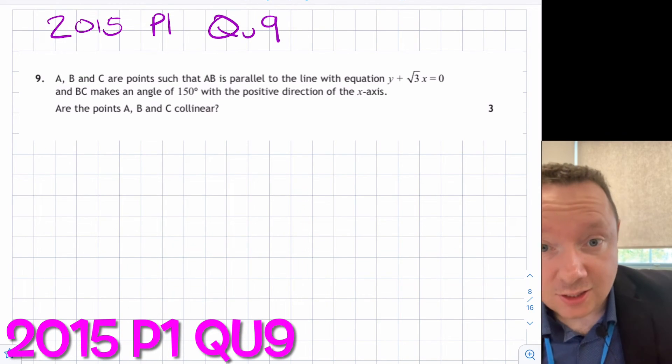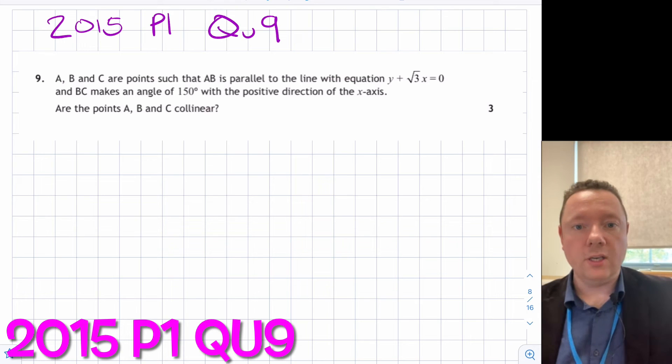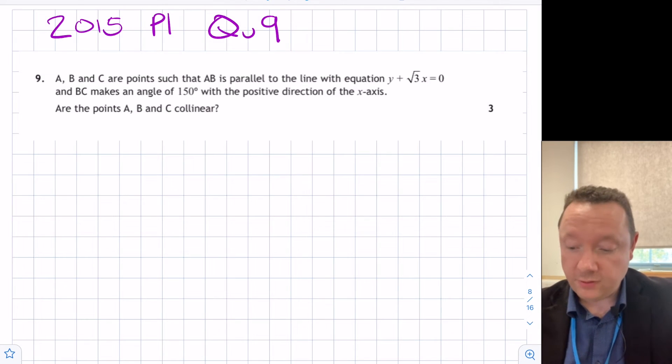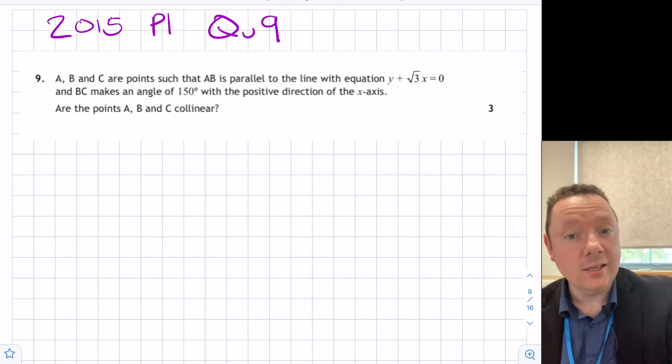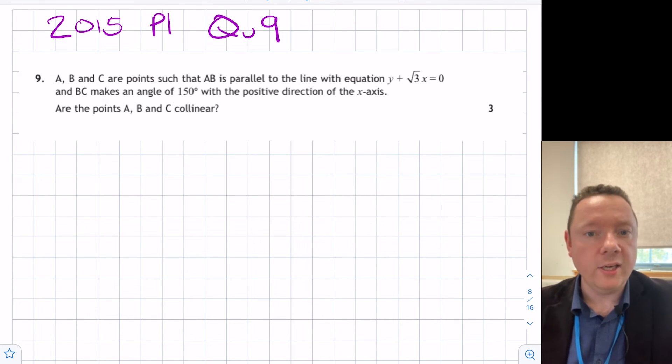A little past paper question that actually uses this with some of the stuff that we've already learnt so far. So 2015, paper 1, question 9 says A, B, C are points such that AB is parallel with the line with equation this, and BC makes an angle of 150 degrees with the positive direction of the x-axis. Are the points collinear or not? So it's a collinear question, but it's using this idea that tan of an angle makes a gradient. So that's the first thing. We need to work out our gradients.